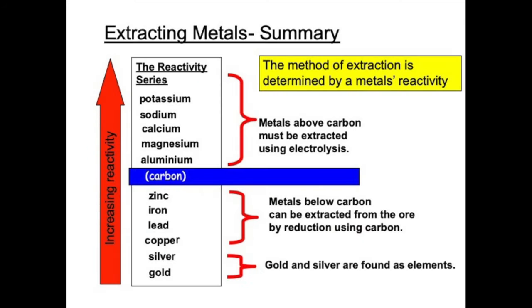In our previous videos we discussed the relationship between the reactivity of a metal and the ease at which it can be extracted from its source. We learnt that metals at the bottom of the reactivity series are the easiest to extract because they are found as elements, while metals at the top are the hardest to extract as they are found as the most stable compounds. Elements such as potassium, sodium, calcium, magnesium, and aluminium have to be extracted using electricity by a process called electrolysis.